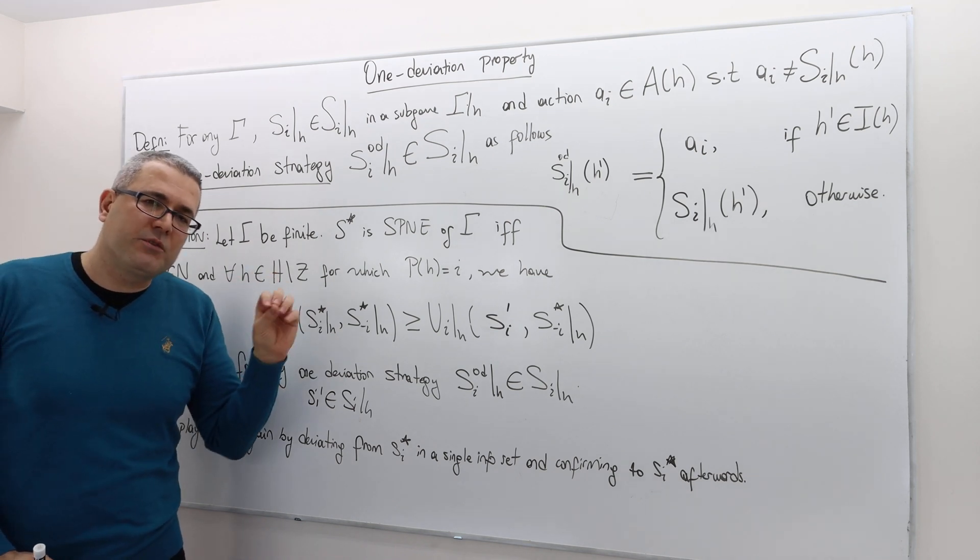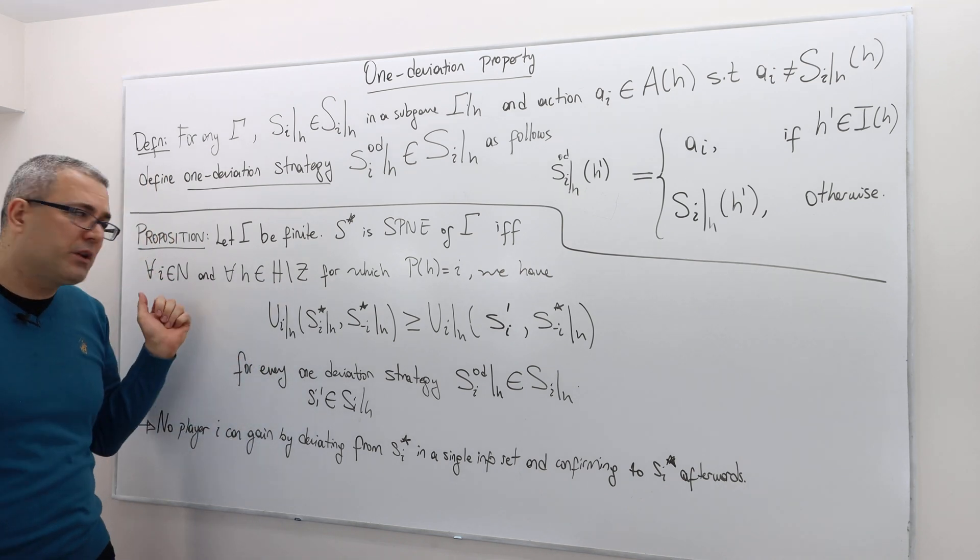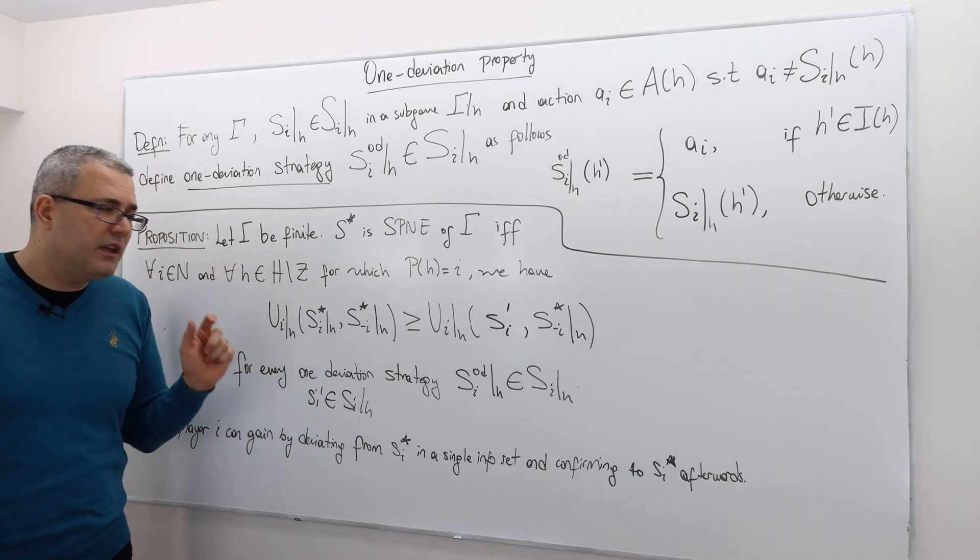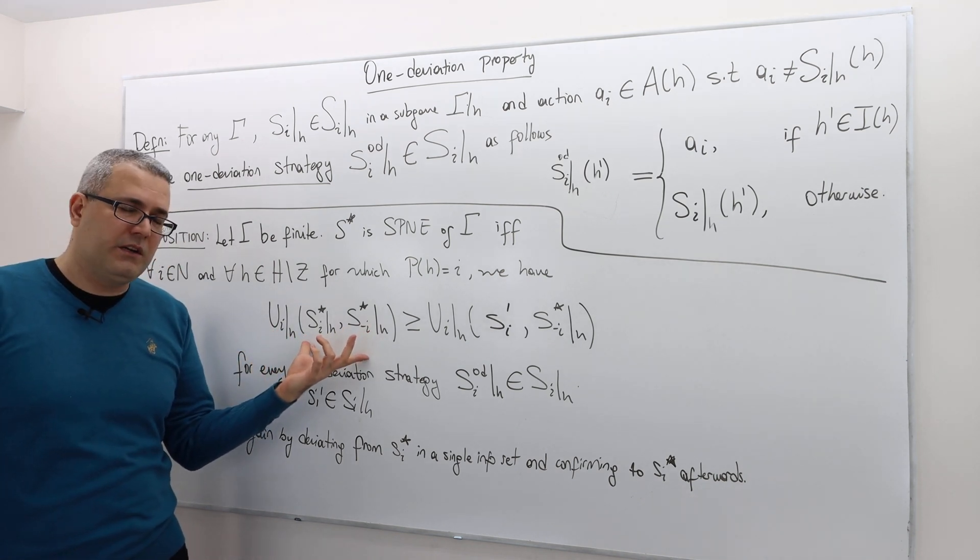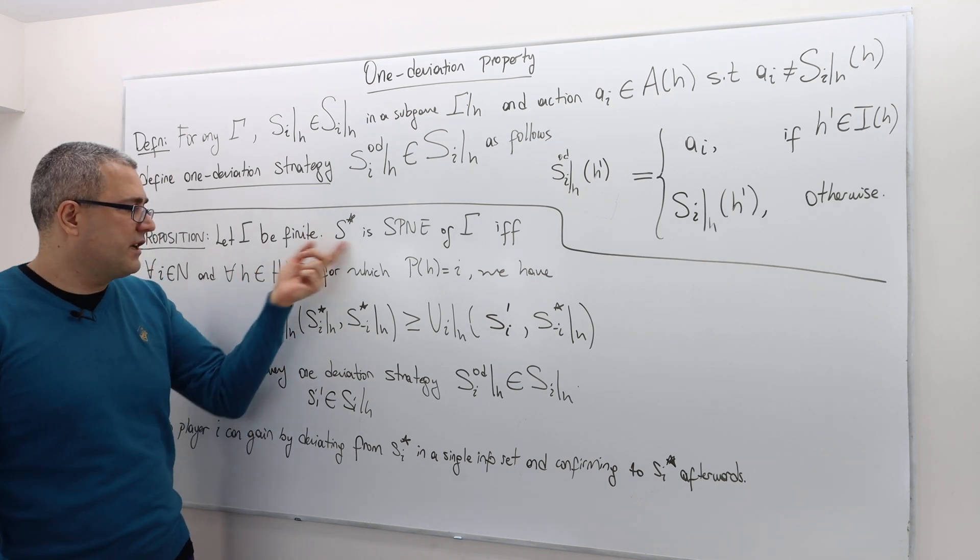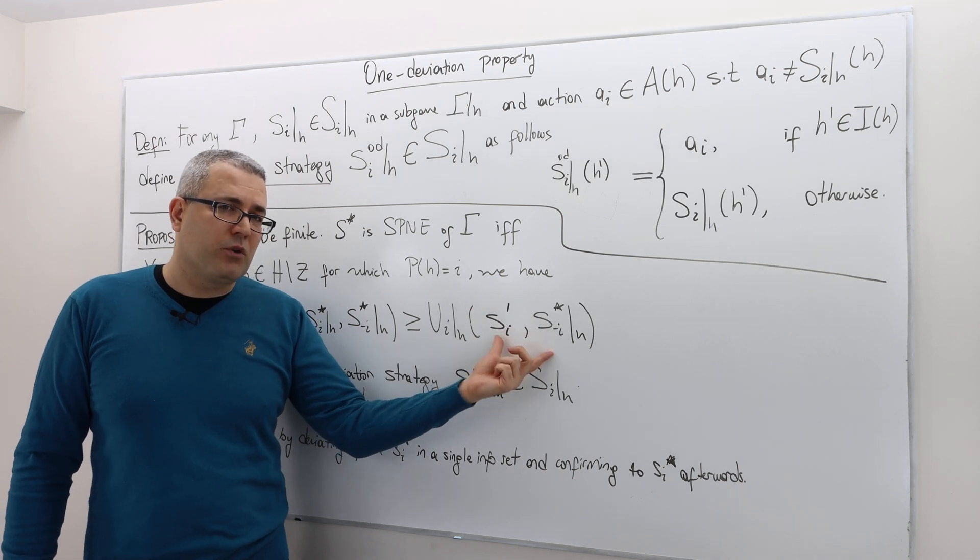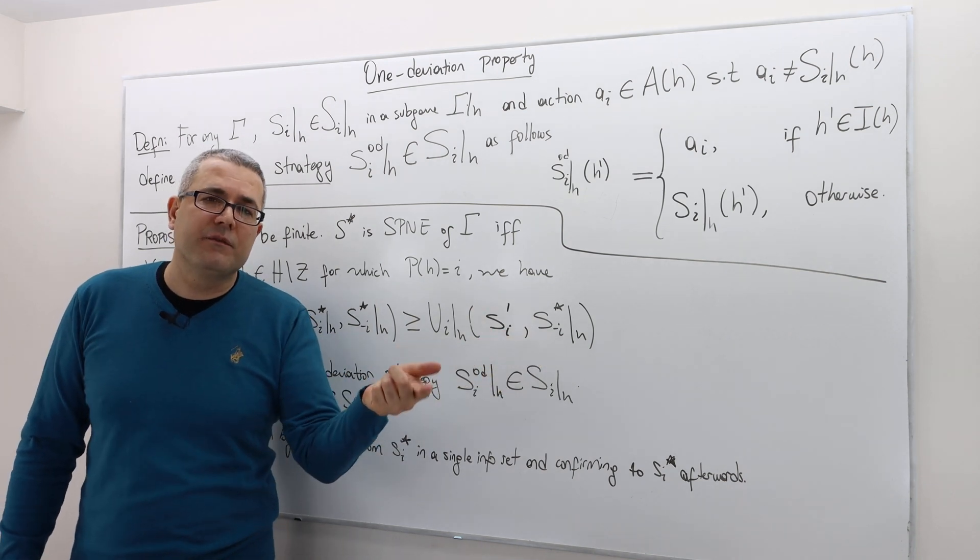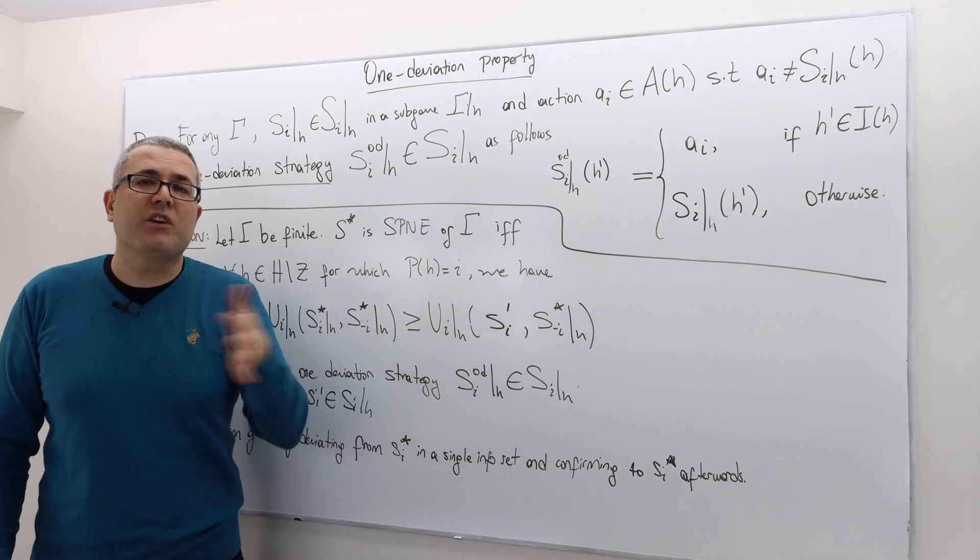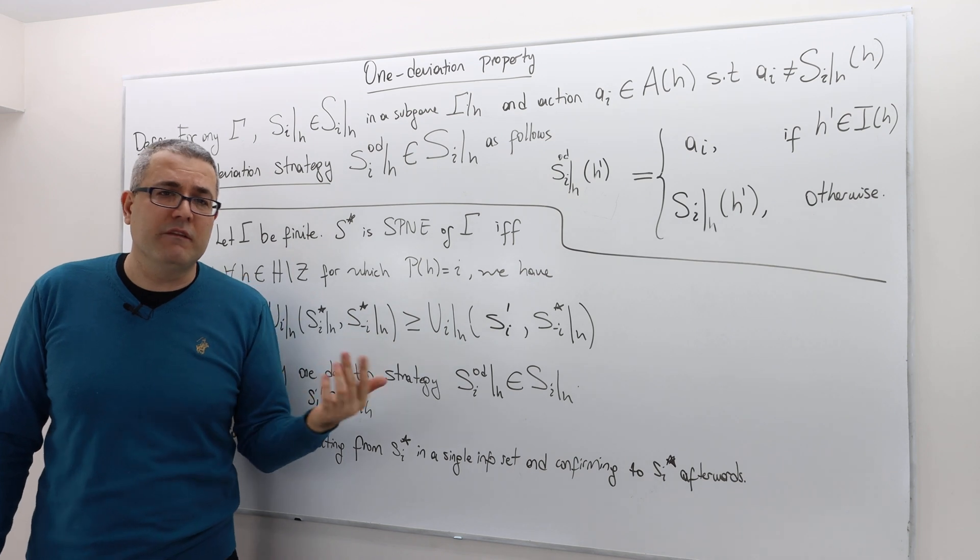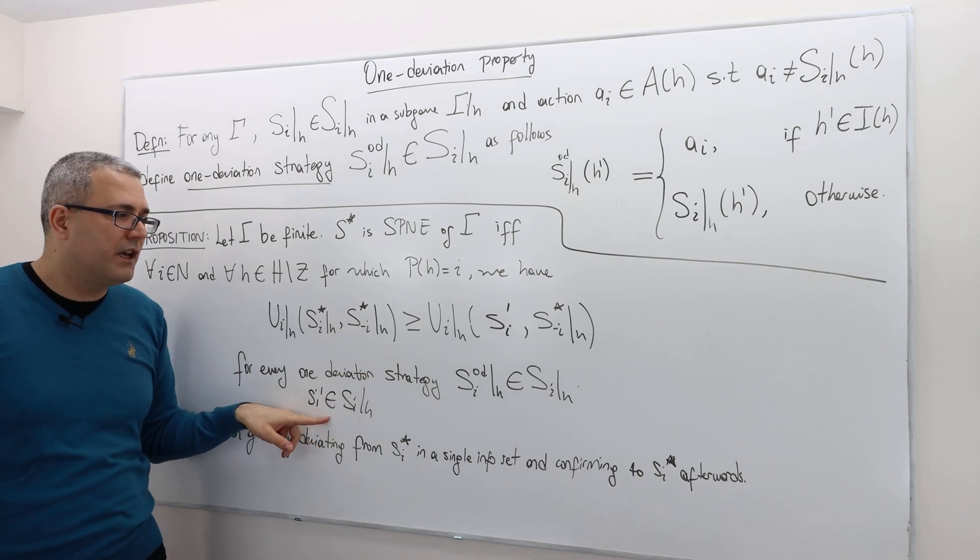if you want to check whether some strategy profile is sub game perfect Nash or not, obviously you have to check this for every player and for every non-terminal history. But the thing is, in the standard definition, you have to check that the payoff of player I under standard strategies S star should be greater than or equal to another strategy profile where he deviates. And you know what? There might be millions of different strategies that are available for him to deviate. So you have to verify this inequality for every possible deviation.